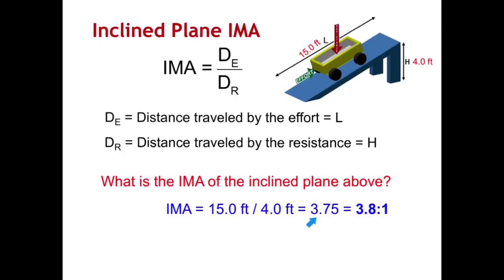So 15.0 divided by 4.0 gives me 3.75. Because of significant figures, I have 2 significant figures here, I have 3 here. So my answer can only be written as 2 significant figures, so I have 3.8. So the inclined plane is a ratio. It's 3.8 to 1.